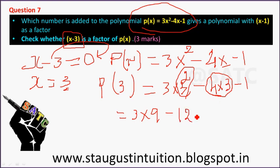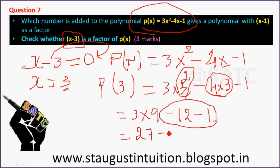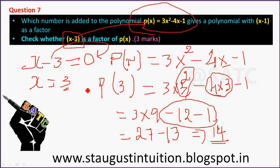So p(3) equals 27 minus 12 minus 1, which equals 14. Since p(3) equals 14, which is not equal to 0, x minus 3 is not a factor of p(x).